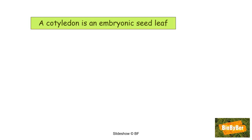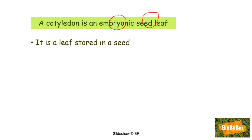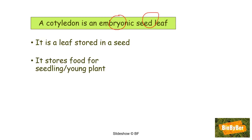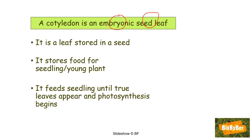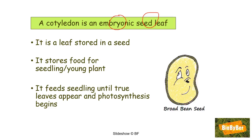So what are seed leaves — cotyledons? A cotyledon is an embryonic seed leaf. It's not a true leaf; it is a leaf found in a seed, found in the embryo of the plant. It stores food for the seedling, or young developing plant, and will feed the seedling until the seedling produces its own true leaves, which are usually green so that photosynthesis can begin. We see these cotyledons in peas, beans, broad beans, and peanuts — when you split them open, each half is a cotyledon.